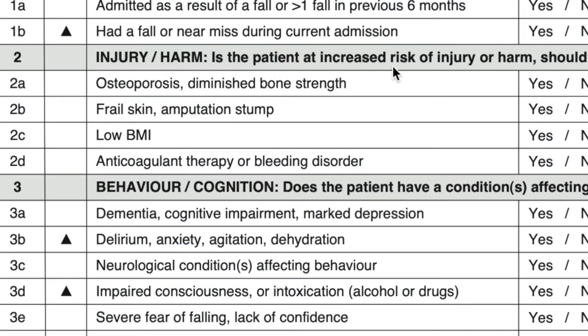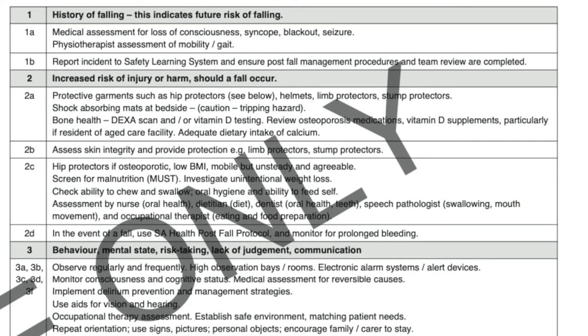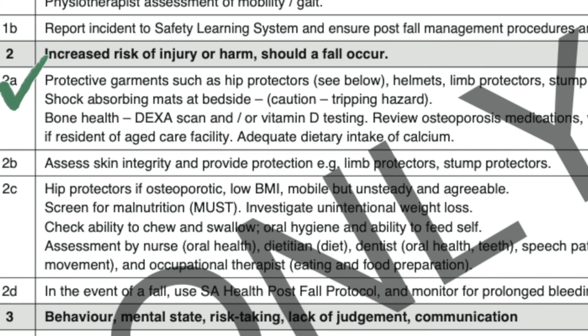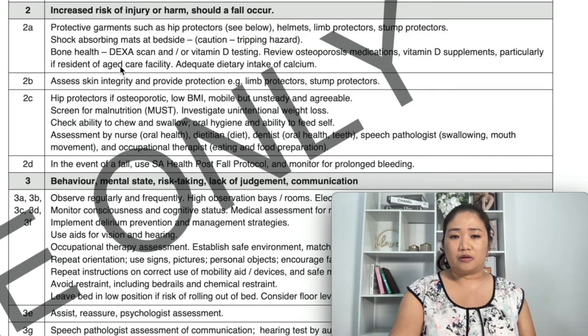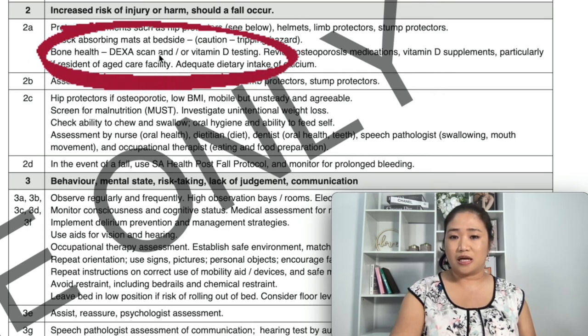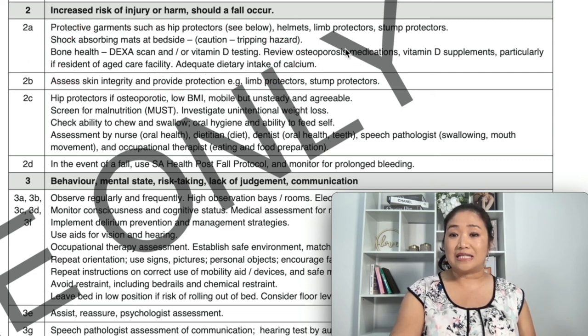Section A point 2 covers injury or harm: is the patient at risk of injury or harm should a fall occur? For example, if the patient has osteoporosis or diminished bone strength and you tick yes, the recommended actions on page four include providing protective garments such as hip protectors, helmets, limb protectors, stump protectors, and shock-absorbing mats at the bedside. Note that mats can be a tripping hazard, so always weigh whether the benefit outweighs the risk. Also consider bone health: DEXA scan, vitamin D testing, and review of osteoporosis medications.